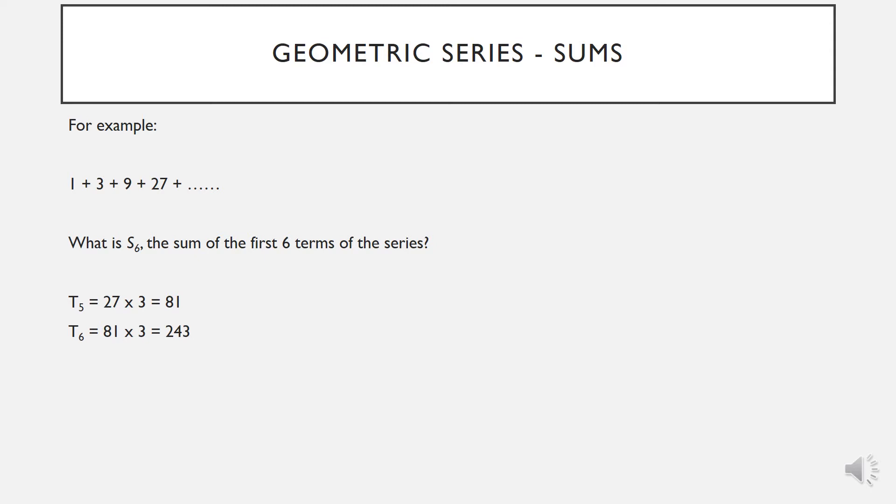To add the first six terms will give us S6. Adding them all up, we get a total of 355. This is known as S6. However, this could be a problem if we were asked to calculate something like S100. It would be very tedious and time consuming.